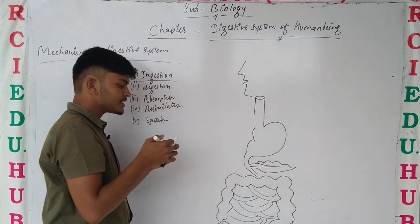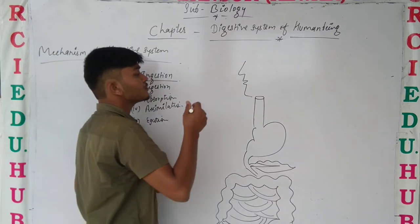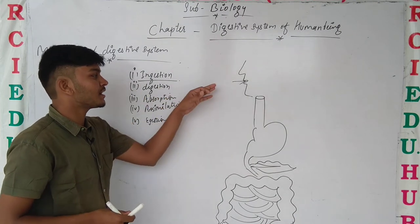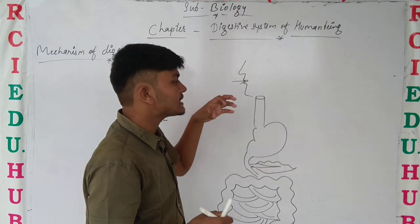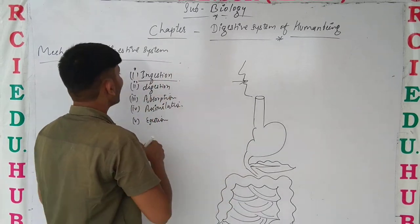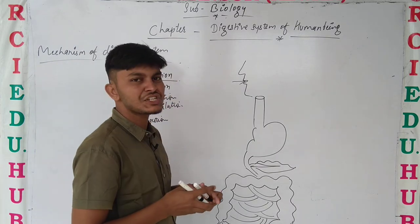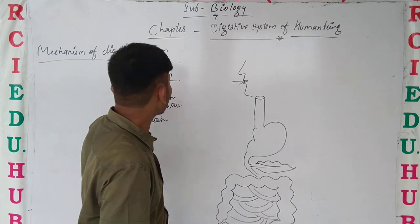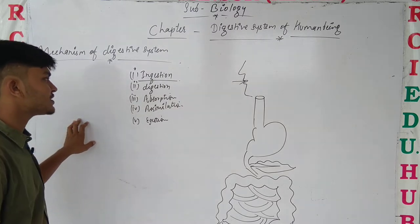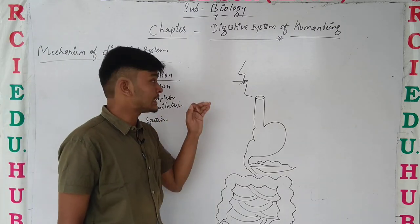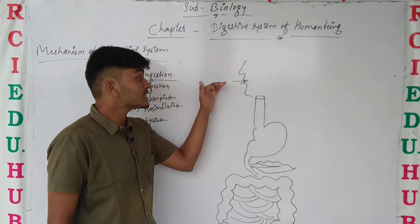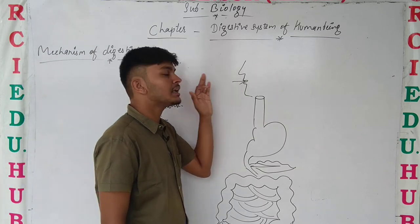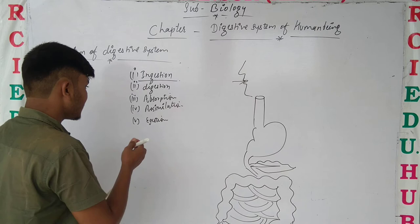We have our digestive system structure. We take our food with our mouth — we take small pieces of food with our teeth. That whole process is known as ingestion. We have our food intake after we masticate it, which is known as ingestion. The mouth is the site of ingestion; it is the anterior opening of the digestive system.